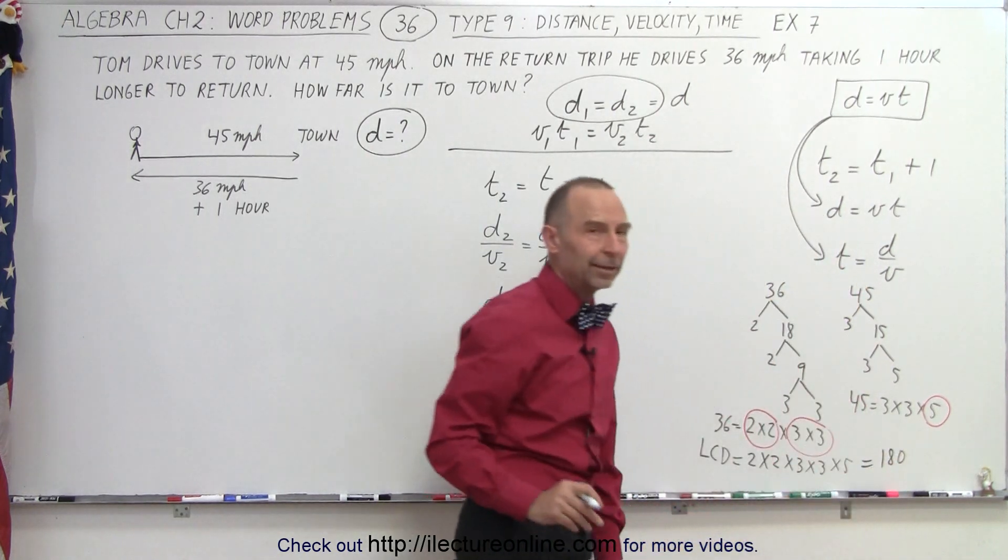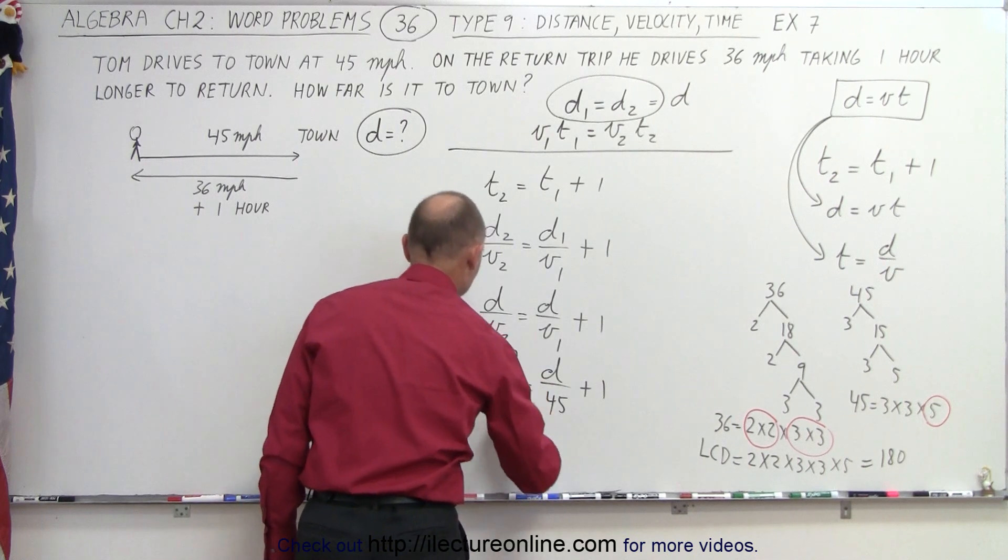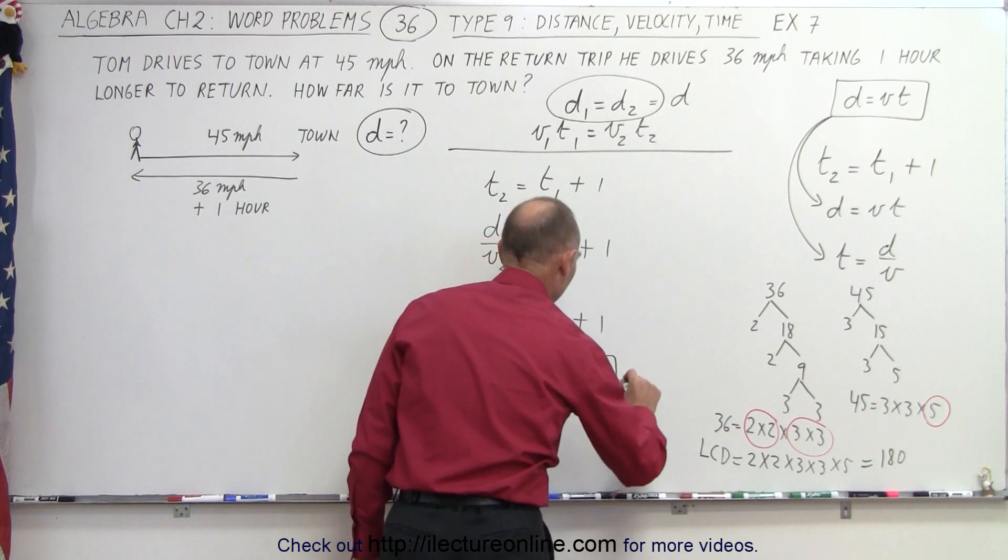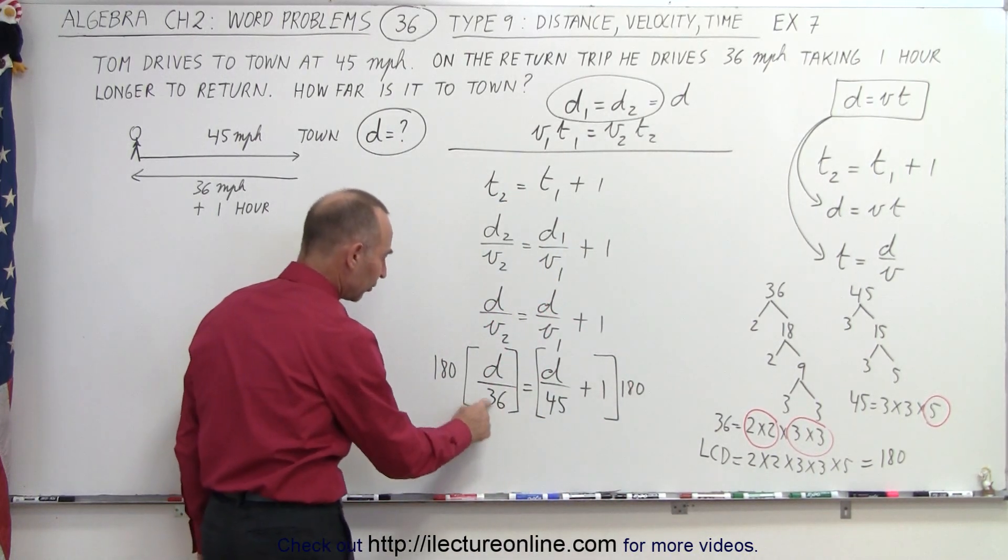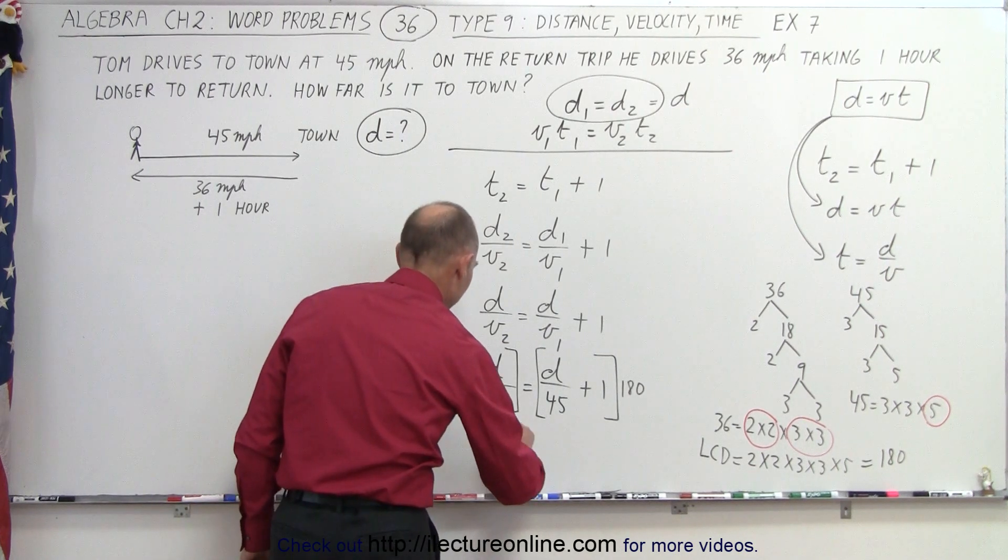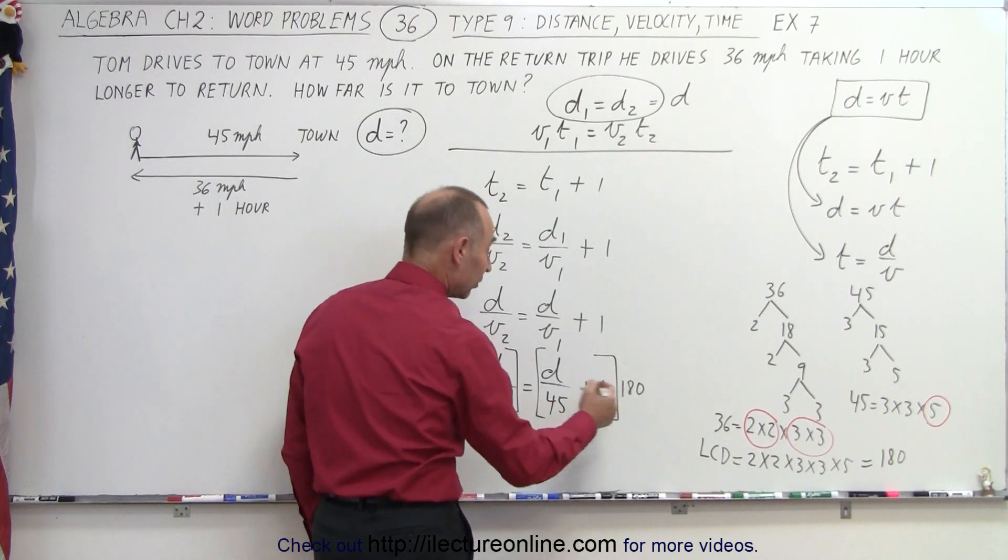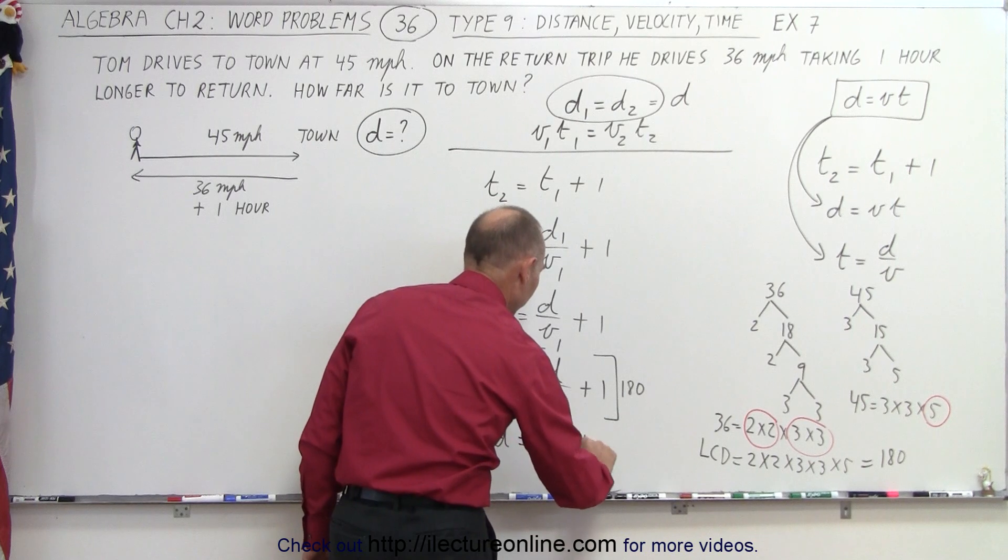Our lowest common denominator is 180, which means I'm going to multiply the left side by 180, and I'm going to multiply the right side by 180. So here I can say that 36 goes into 180 5 times. That means I get 5D is equal to 45 goes into 180 4 times, so I get 4D. And here I have 1 times 180 plus 180.